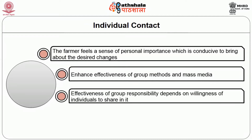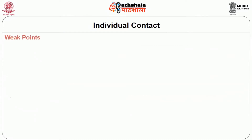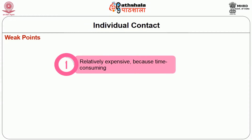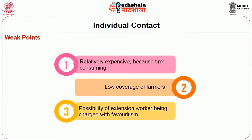Individual contact methods enhance the effectiveness of group methods and mass media. Effectiveness of group responsibility depends on the willingness of individuals to share in it — it is individuals, not groups, who learn, make choices, and accept responsibilities. The weak points are that they are relatively expensive because they are time-consuming, have low coverage of farmers, and there is a possibility of the extension worker being charged with favoritism.